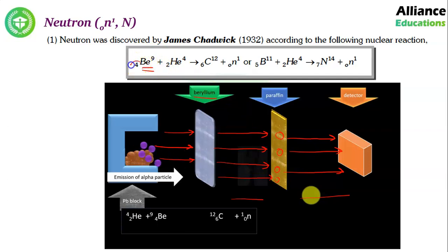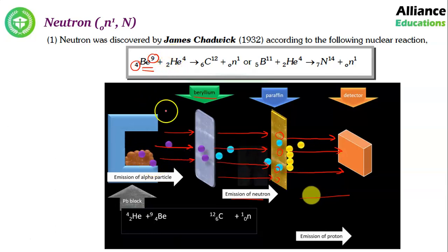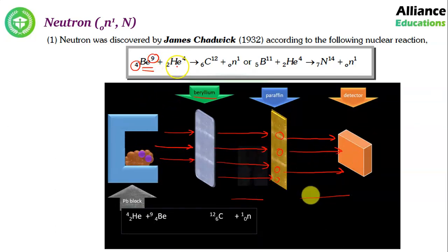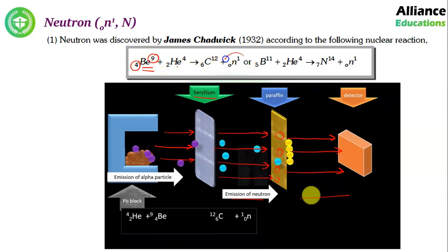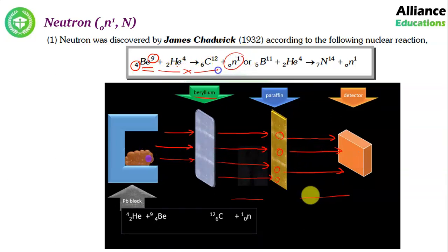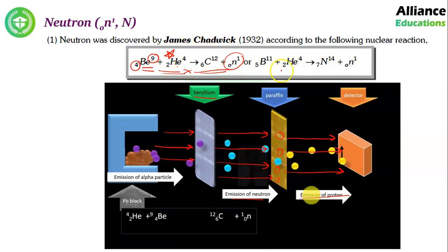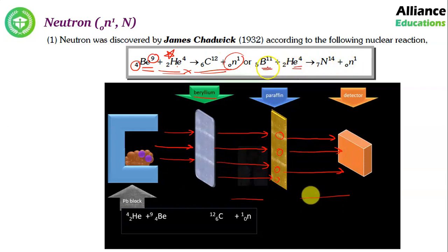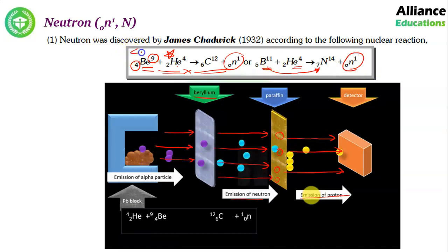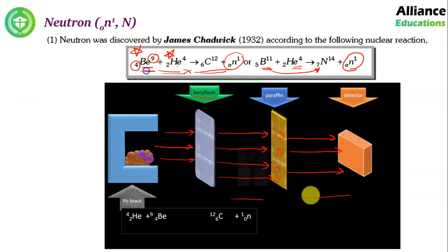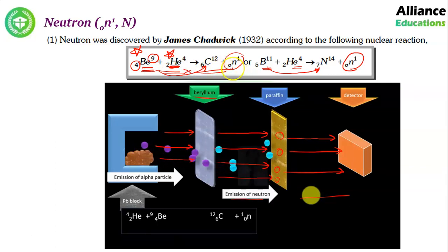So the reaction that took place was: Beryllium (atomic number 4, mass number 9), when bombarded with alpha particles — which are nothing but the nucleus of helium — transforms into Carbon, and one neutron is released. Similarly, when boron is bombarded with alpha particles, it transforms into Nitrogen and one neutron is emitted. You should know this reaction: alpha particle bombarding on beryllium → beryllium transforms into carbon, and one neutron is emitted.